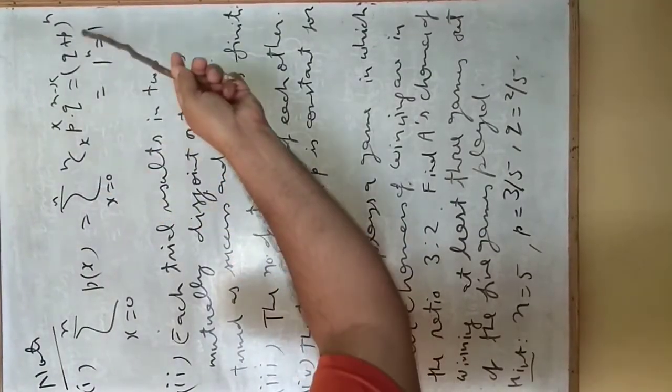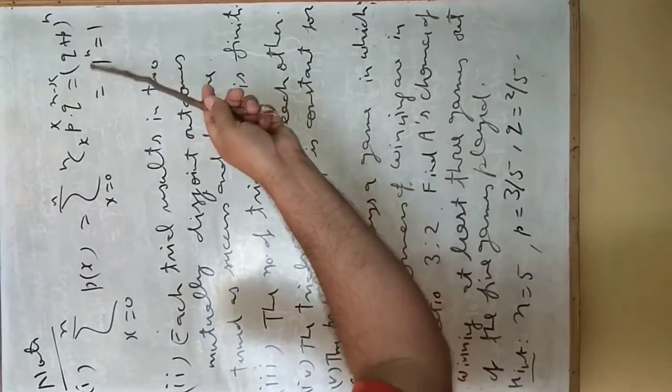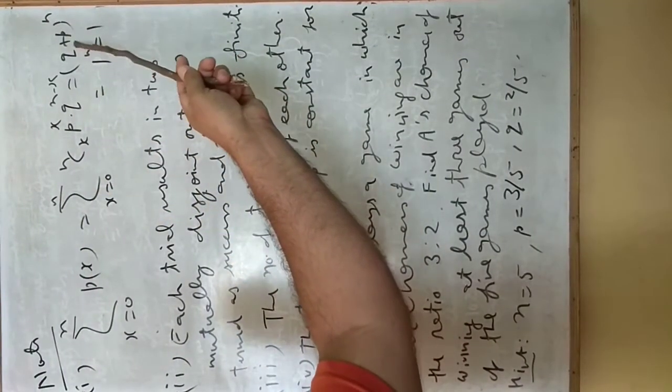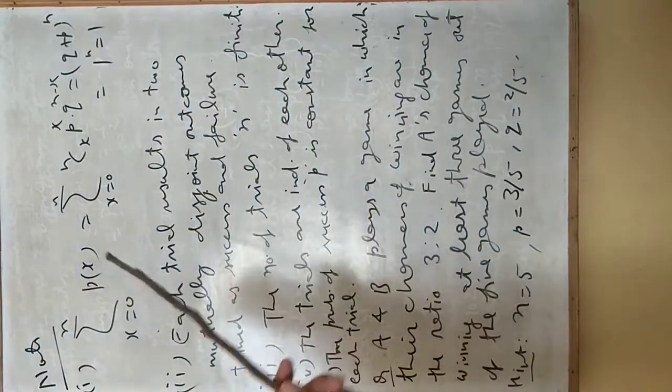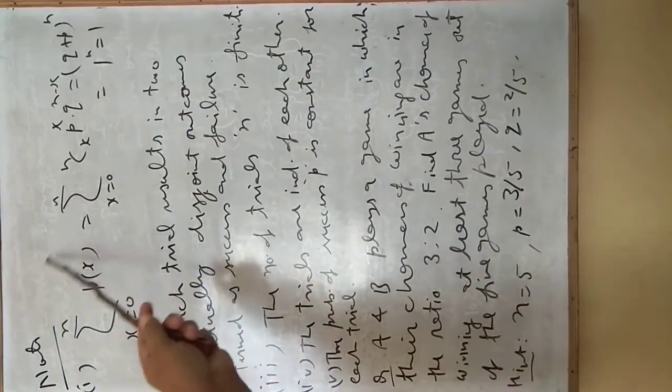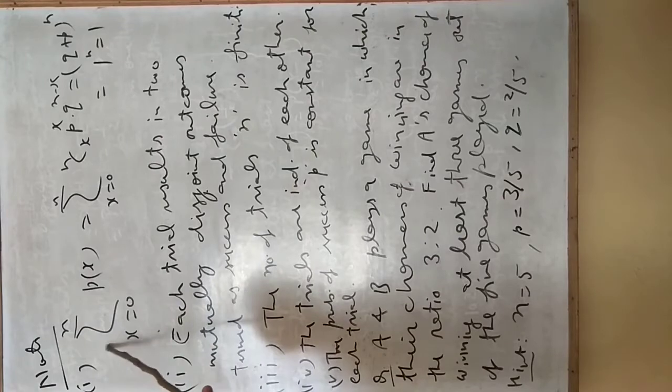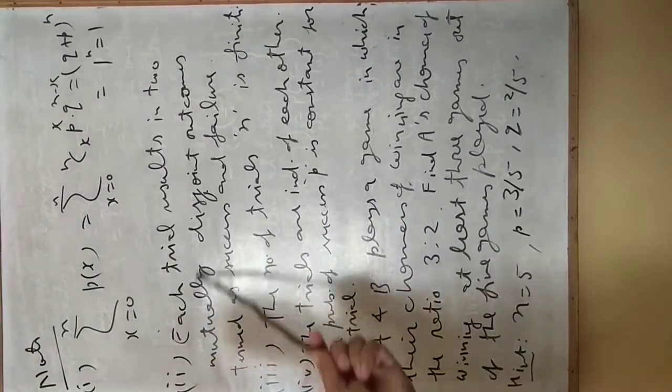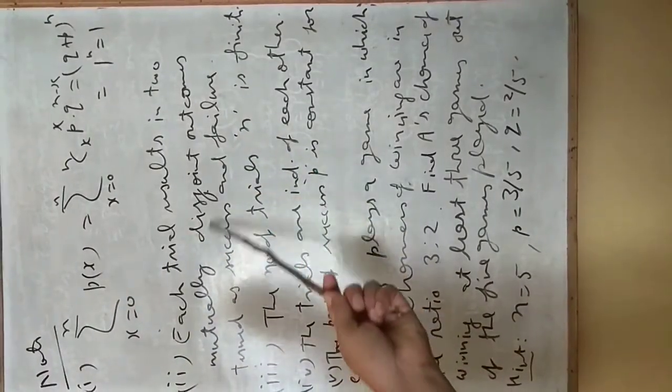It will be nothing but (q plus p) to the power n, which means 1 to the power n. This is equal to n, since q plus p equals 1. Since it is our probability mass function, therefore we have taken the summation sign. For a continuous case, we will take the integration sign.